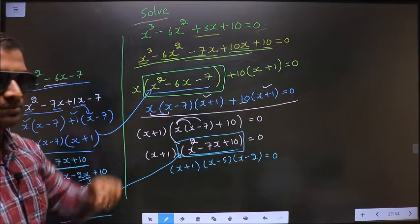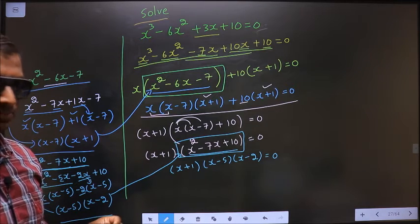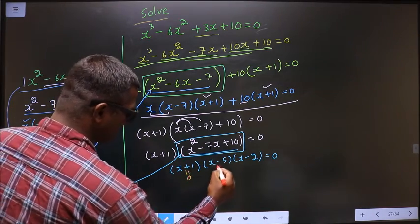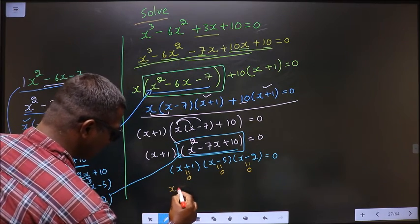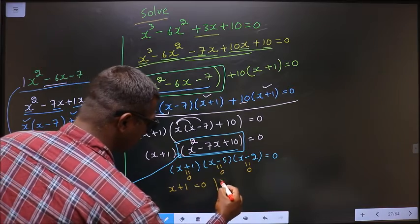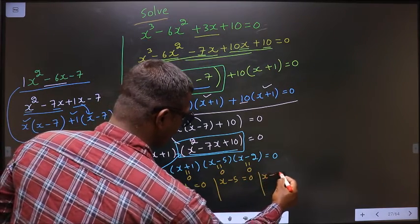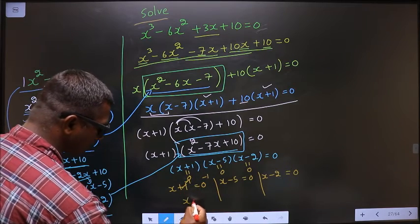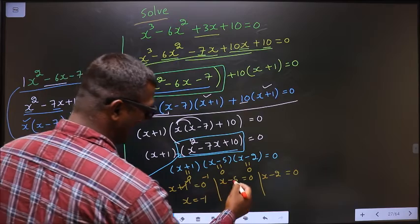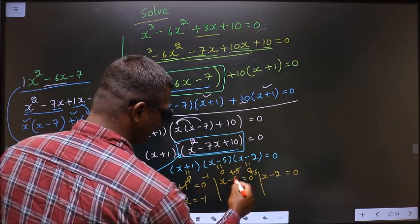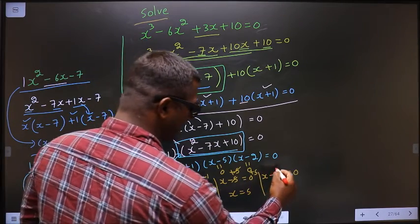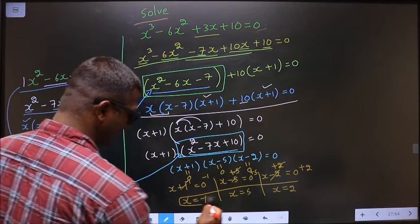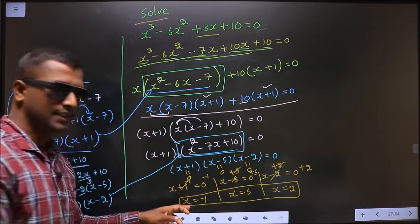They told you to solve, which means you need to find the values for x. To get the values for x, equate each bracket to 0: x plus 1 equal to 0, or x minus 5 equal to 0, or x minus 2 equal to 0. Subtract 1 on both sides: x is minus 1. Add 5 on both sides: x equal to 5. Add 2 on both sides: x equal to 2. So these are the values for x. This is our answer.